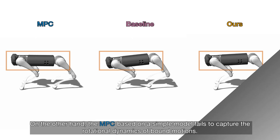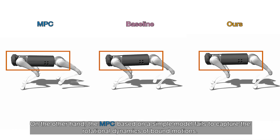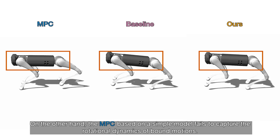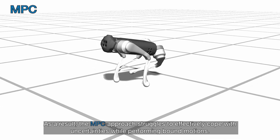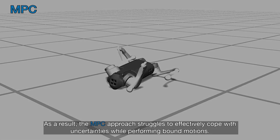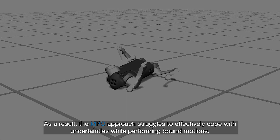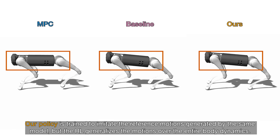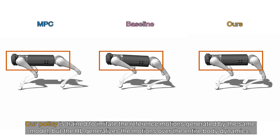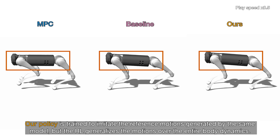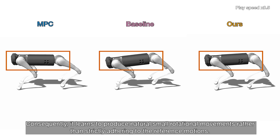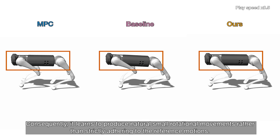On the other hand, the MPC based on a simple model fails to capture the rotational dynamics of bound motions. As a result, the MPC approach struggles to effectively cope with uncertainties while performing bound motions. Our policy is trained to imitate the reference motions generated by the same model, but the RL generalizes the motions over the entire body dynamics. Consequently, it learns to produce natural small rotational movements rather than strictly adhering to the reference motions.